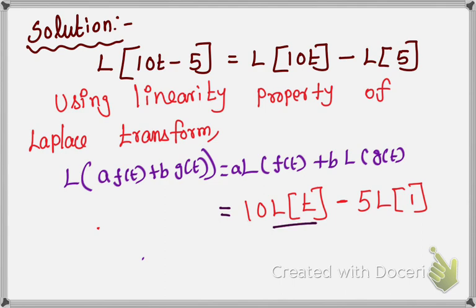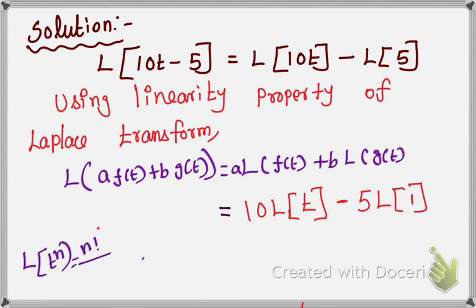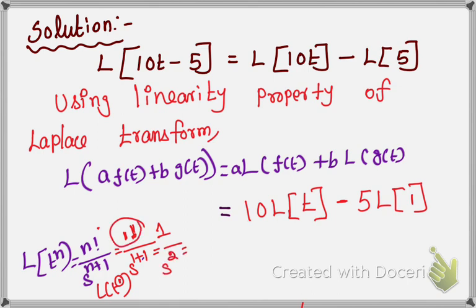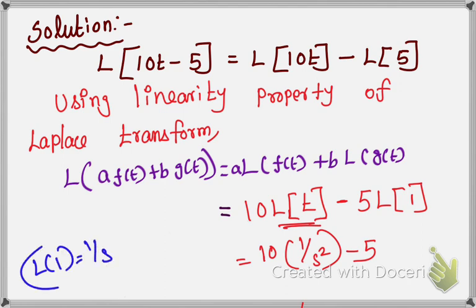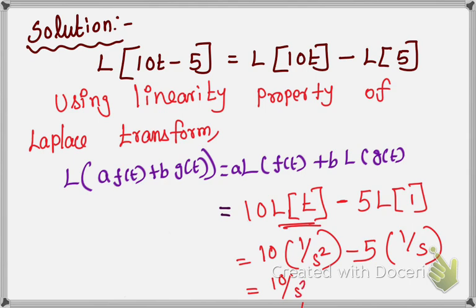What is the formula for L of t? The Laplace transform of t equals 1 by s squared. You can also derive it using L of t to the power n equals n factorial by s to the power n plus 1. For L of t, n equals 1, so you get 1 factorial by s to the power 2, which is 1 by s squared. So you get 10 times 1 by s squared. For L of 1, the Laplace transform of 1 equals 1 by s. So minus 5 times 1 by s. Multiplying out, you get 10 by s squared minus 5 by s.